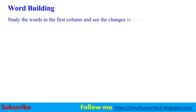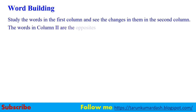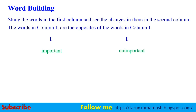Study the words in the first column and see the changes in them in the second column. The words in column 2 are the opposites of the words in column 1. In column 2 the words will be the opposites using a prefix. For example: important becomes unimportant — the prefix 'un' is used. Next, patient becomes impatient — the prefix 'im' is used before the word patient. Similarly, pleasure becomes displeasure — so both words are totally opposite to each other.